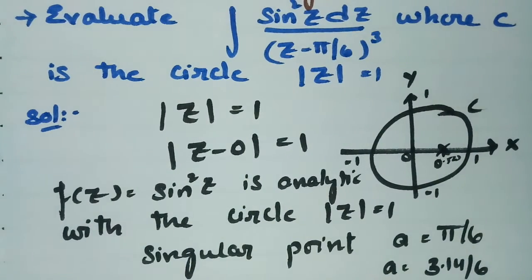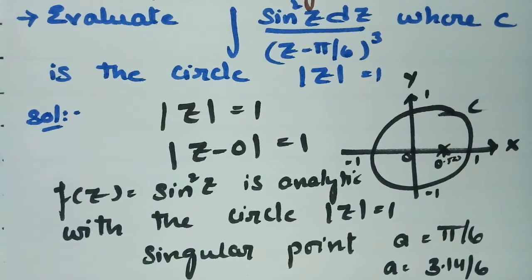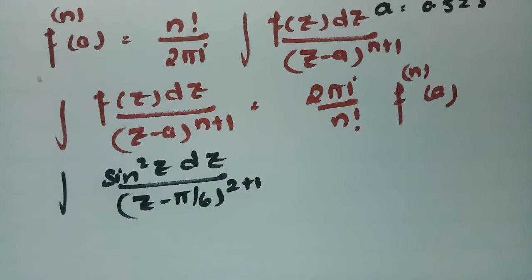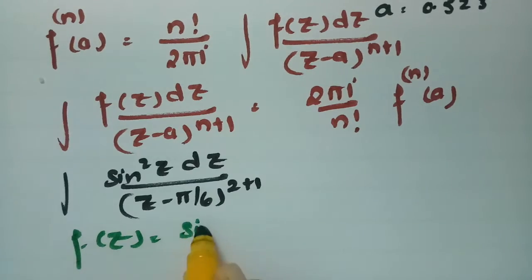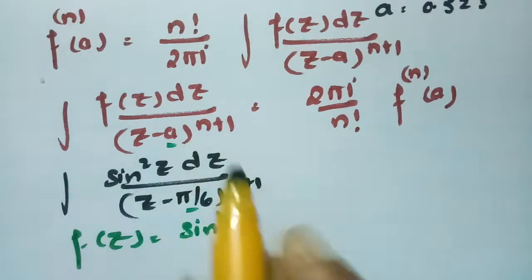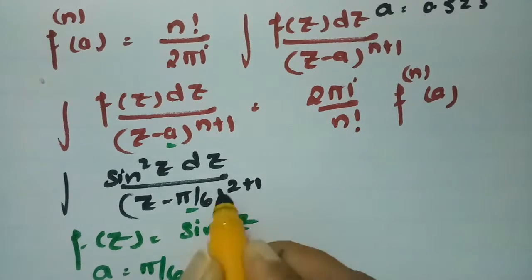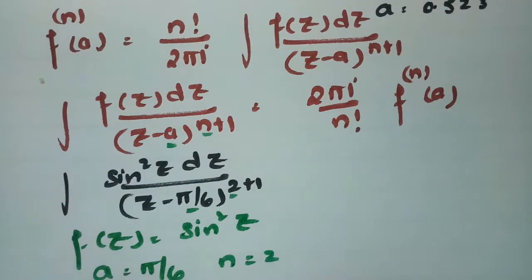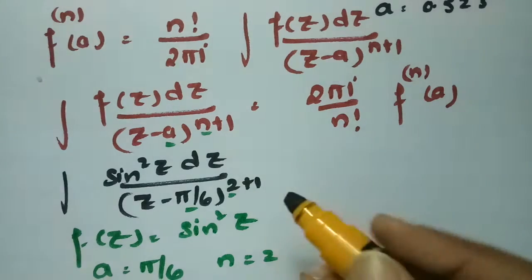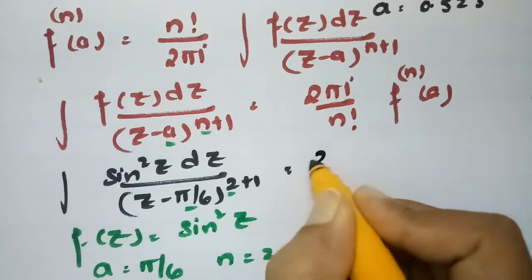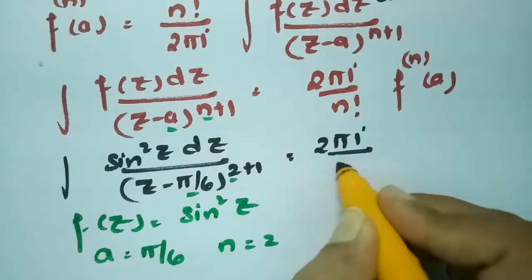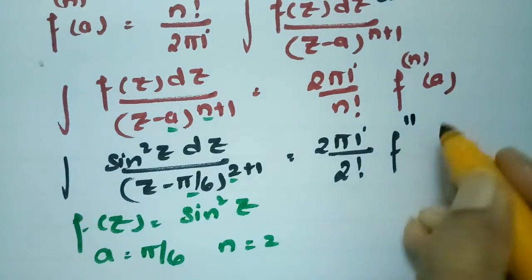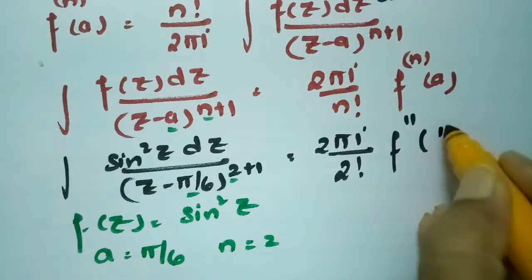Looking at the given integral: sin²z dz / (z - π/6)³. Since 3 = 2 + 1, comparing with the formula gives f(z) = sin²z, a = π/6, and n = 2. Substituting, the integral equals 2πi / 2! times the second derivative of f evaluated at a = π/6.